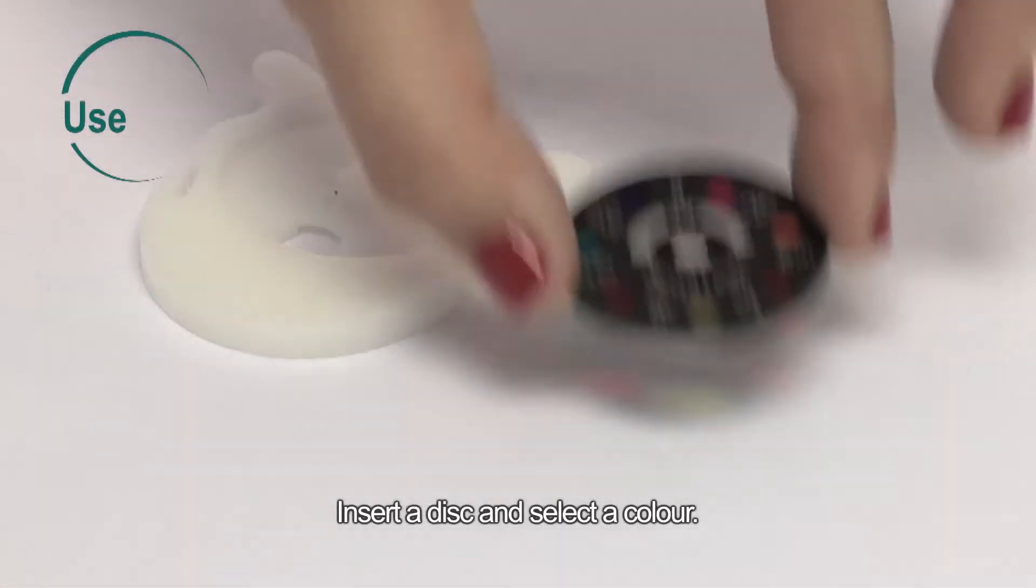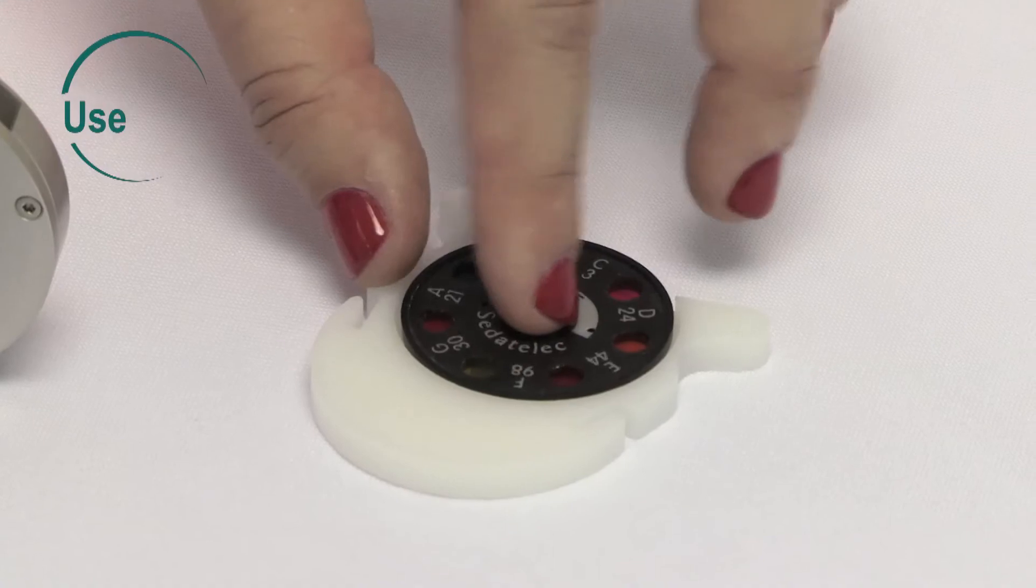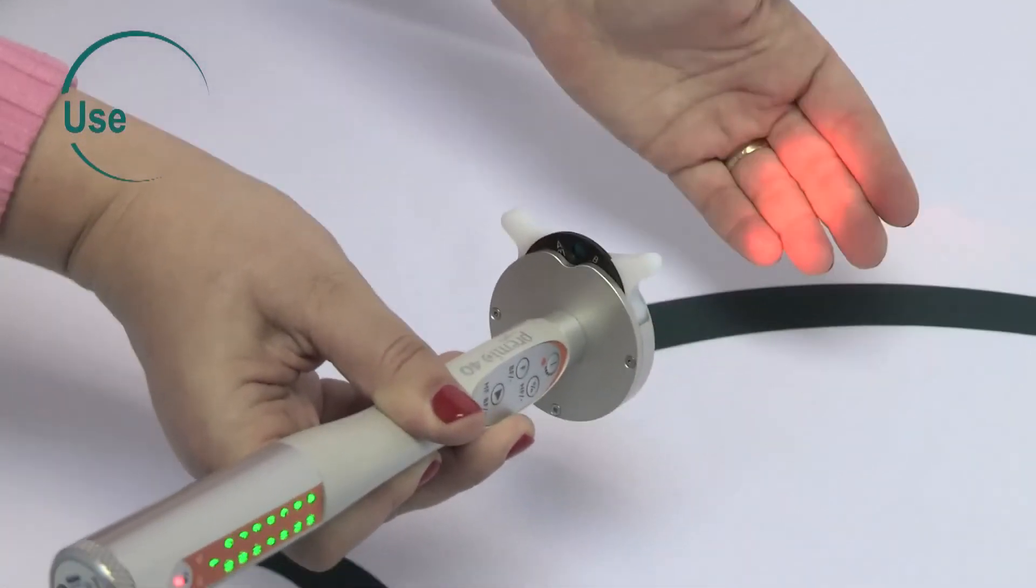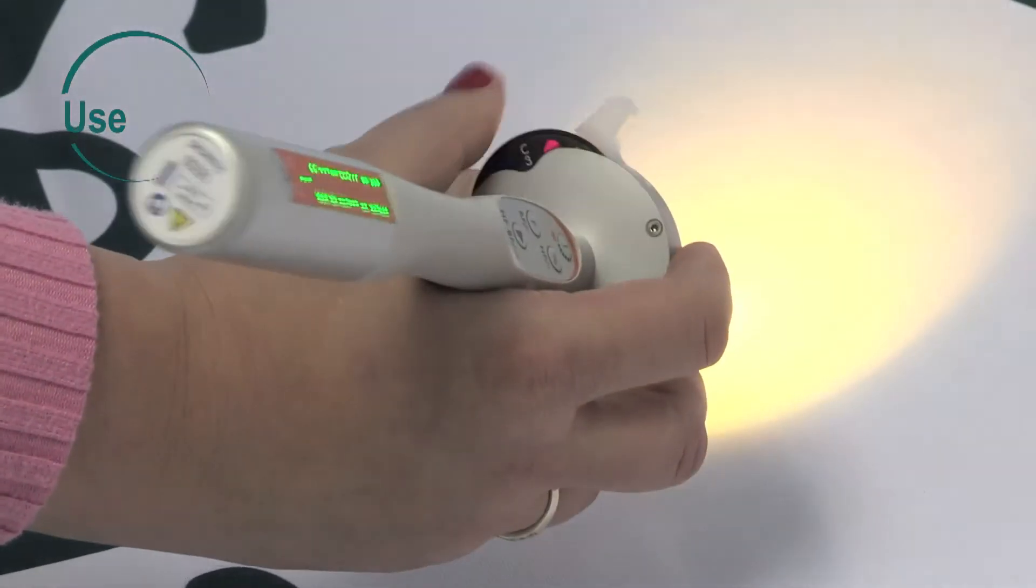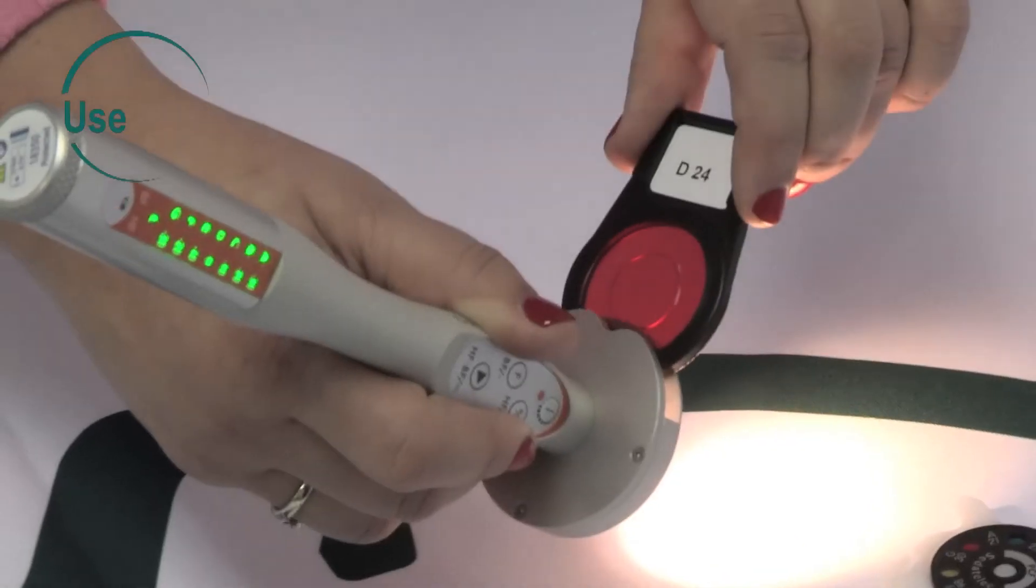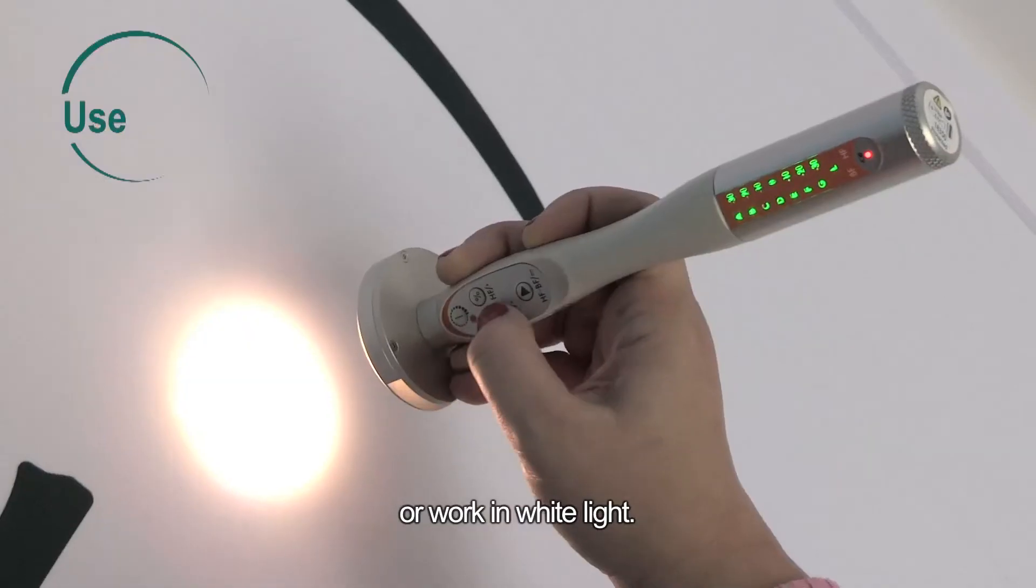Insert a disc and select a color. You can also insert a filter or work in white light.